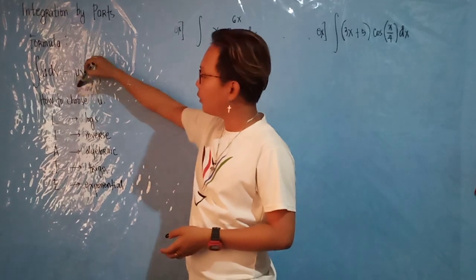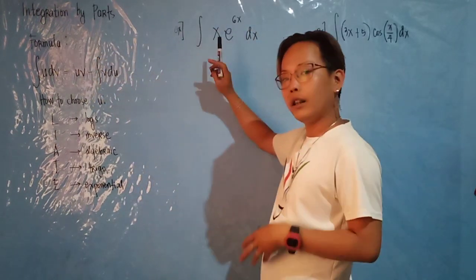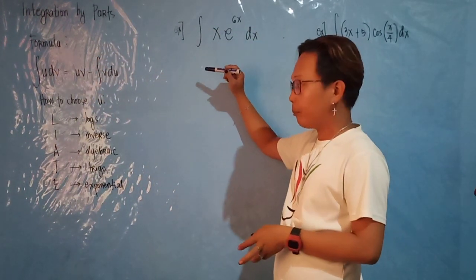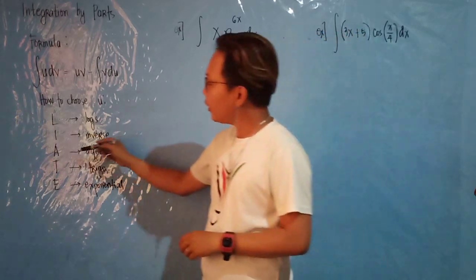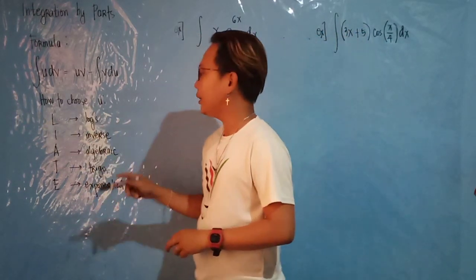But first, you have to know how to choose which one you're going to make your u. Now, we have a formula, which is the LIATE.